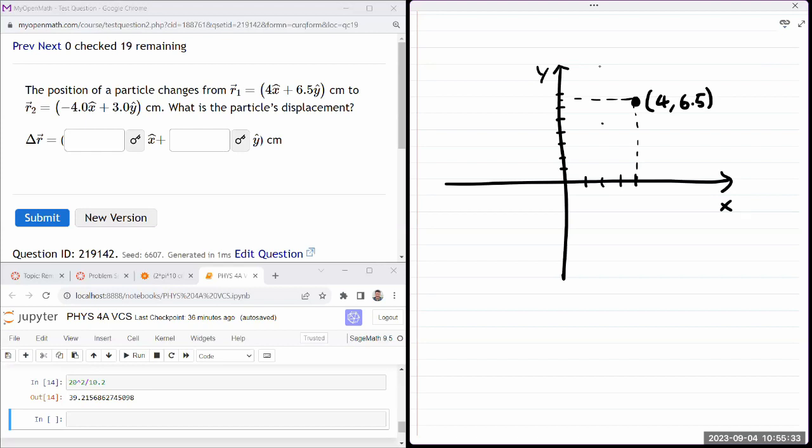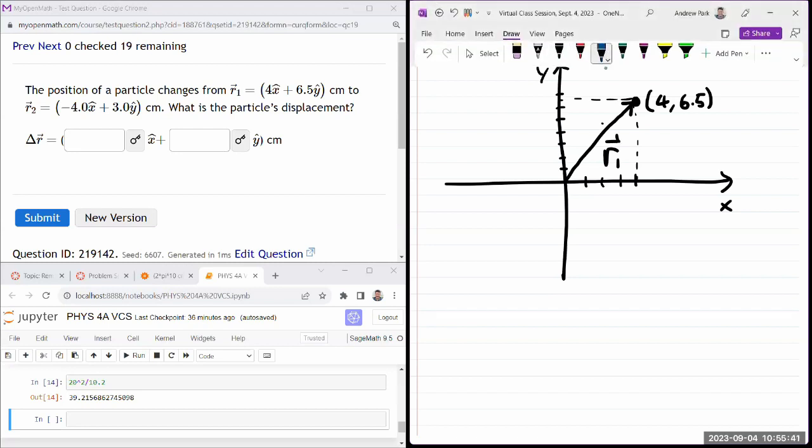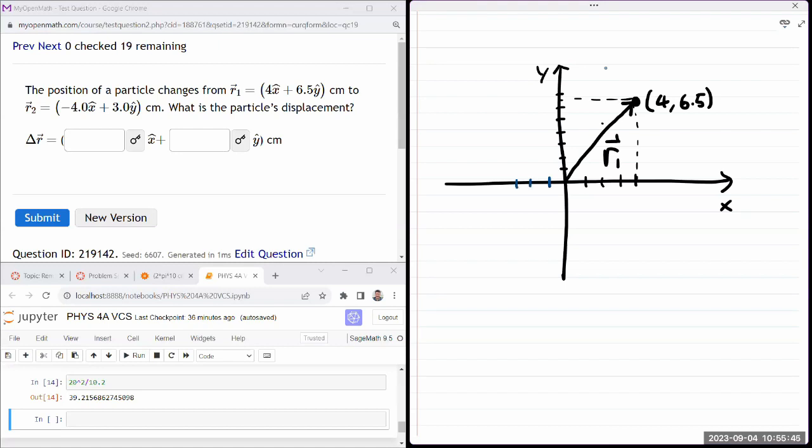So this is going to be a way to indicate my initial displacement vector R1. And my second displacement vector R2, it'll be minus four for the x component and then three for the y component. And this is the representation of my R2 vector, the second displacement vector.